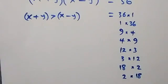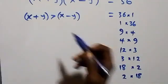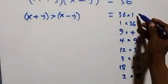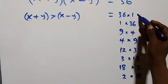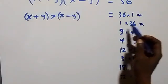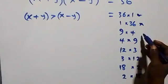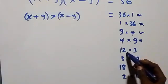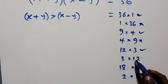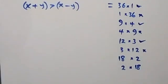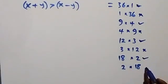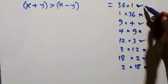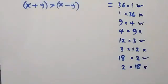When we consider these factor pairs, we follow the condition that the first bracket must be greater than the second. So 36 times 1 works, 1 times 36 does not. 9 times 4 works, 4 times 9 does not. 12 times 3 works — 12 is greater than 3. 3 times 12 does not. 18 times 2 works, 2 times 18 does not. So we have 4 valid cases.